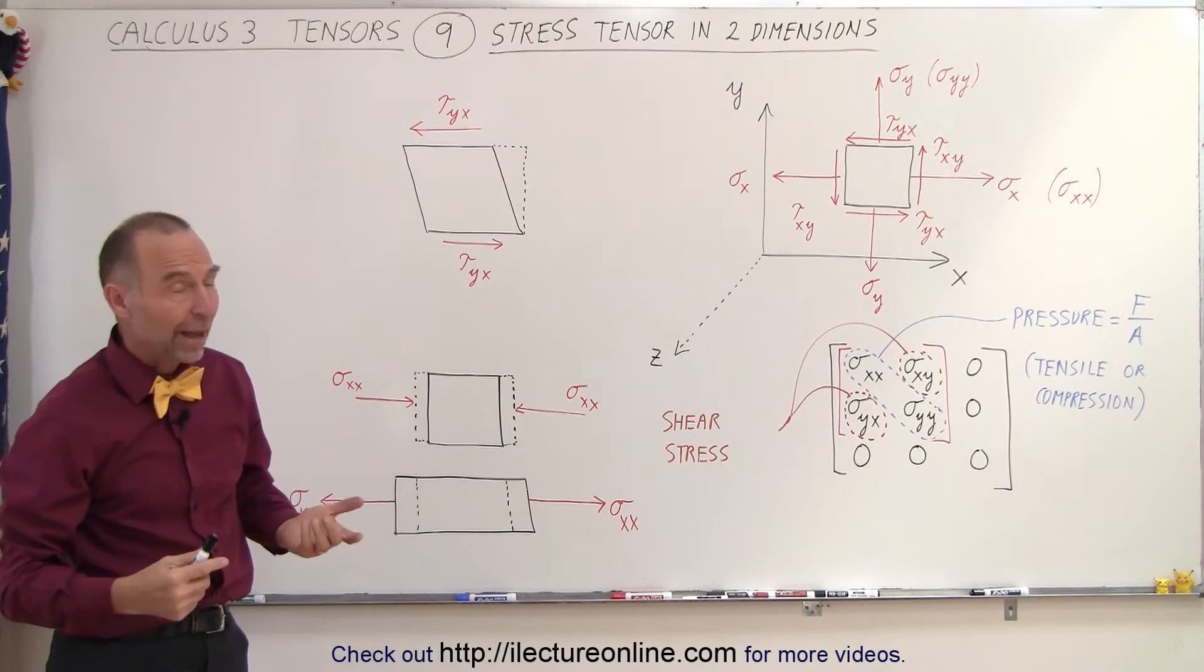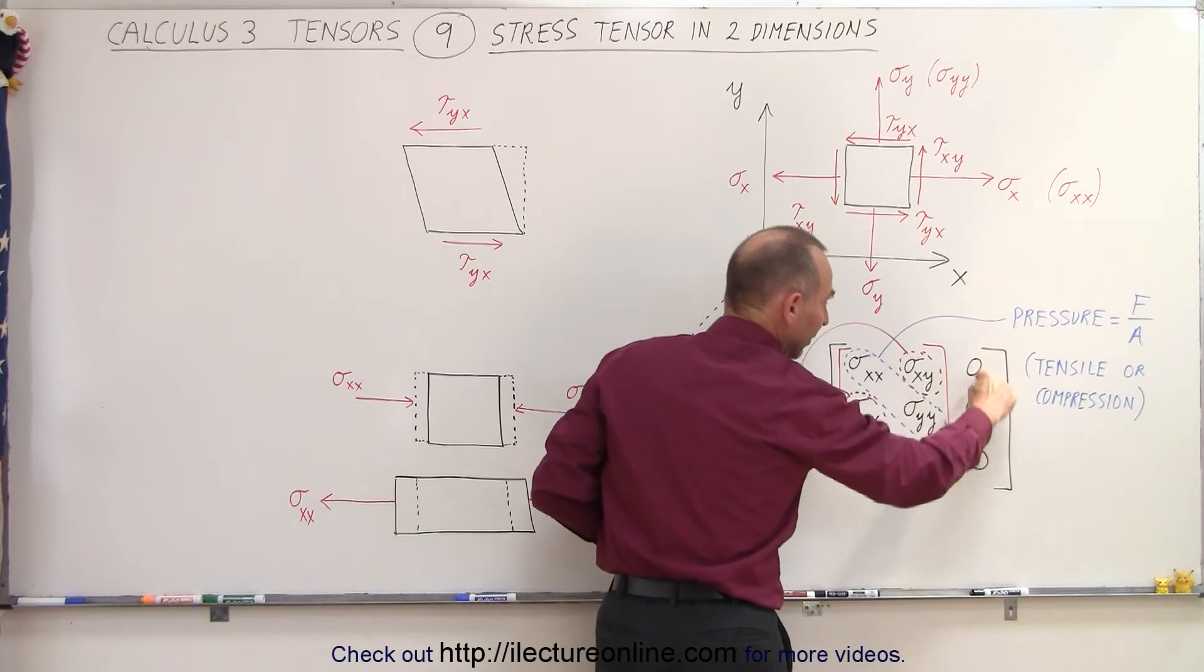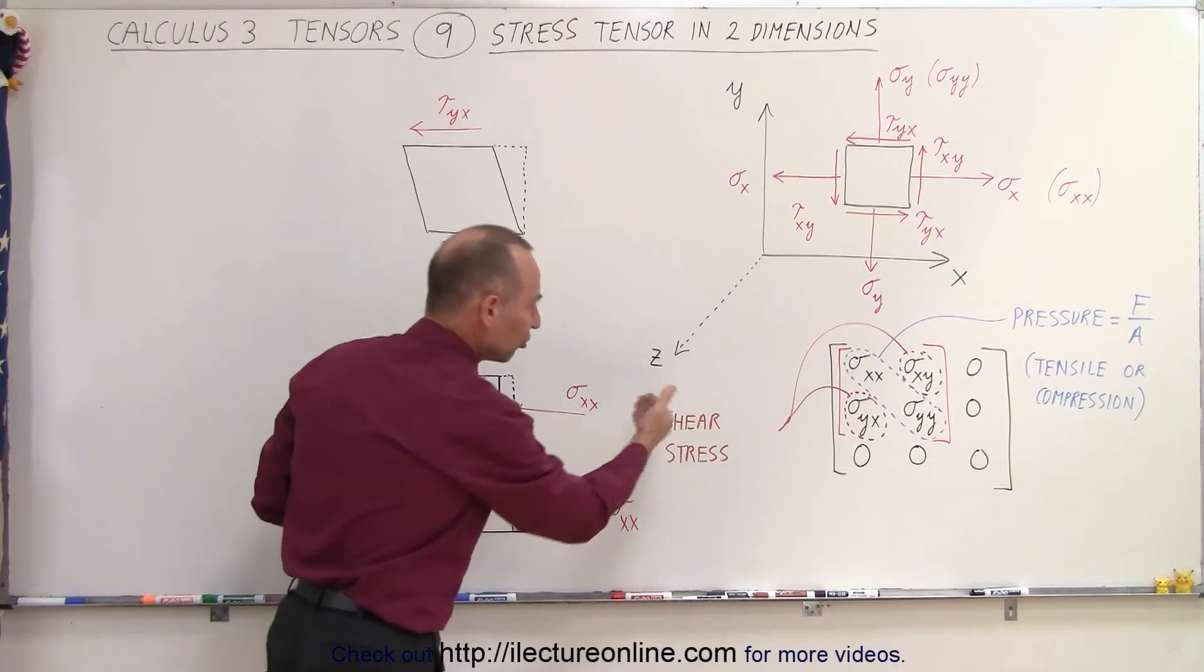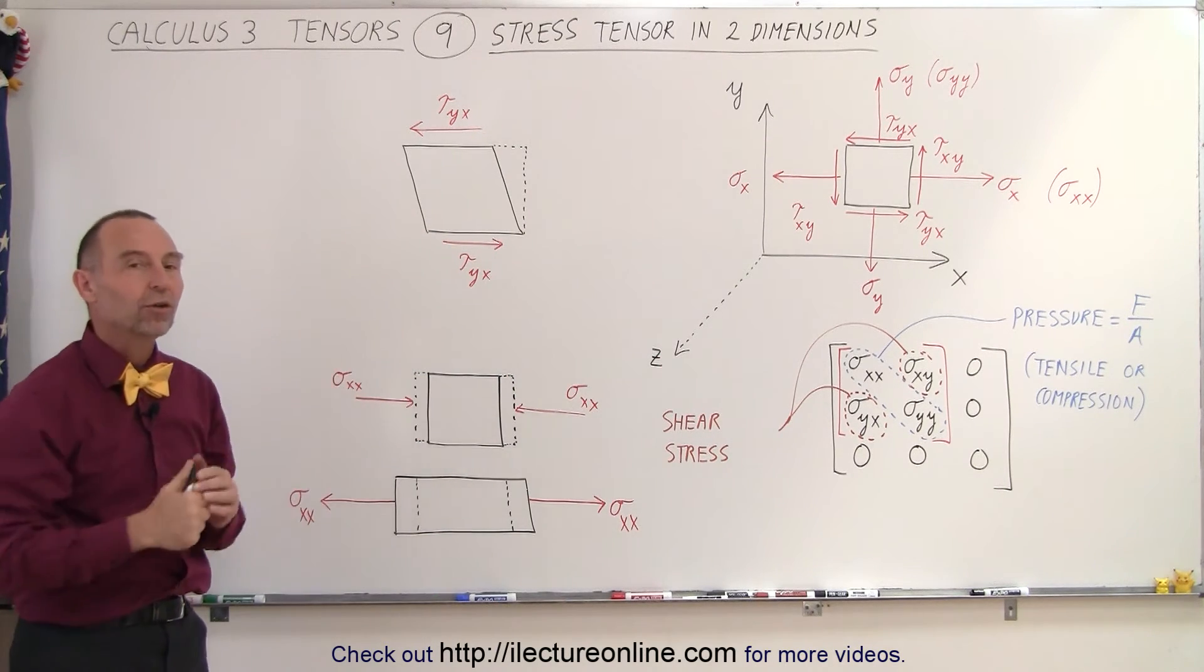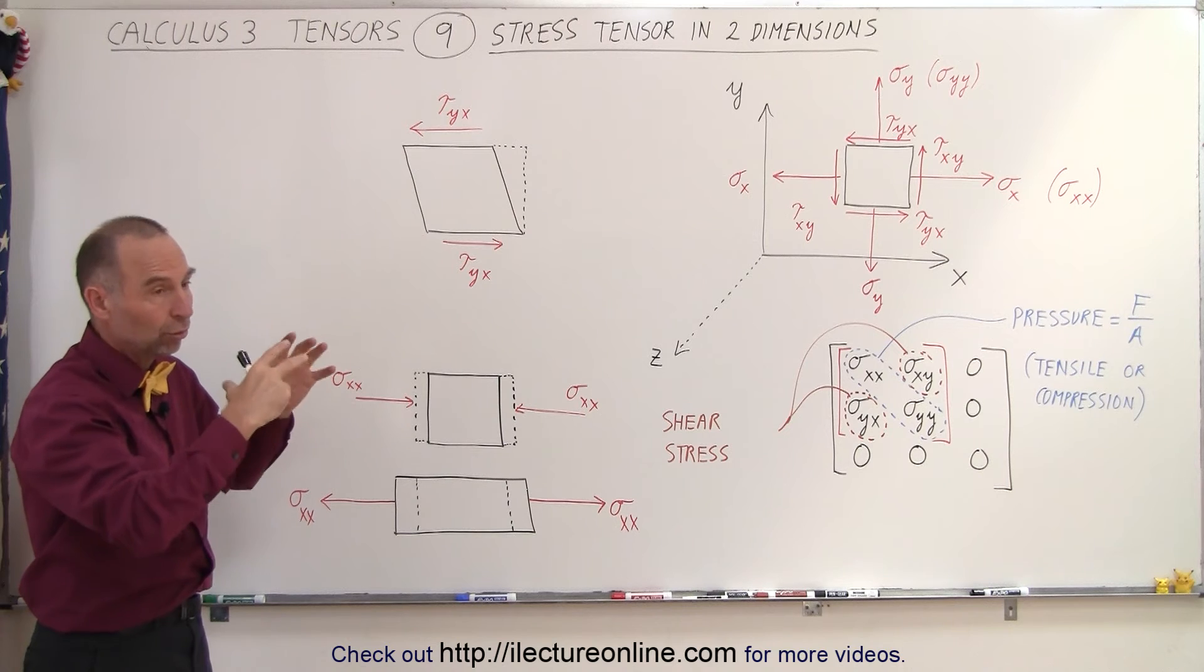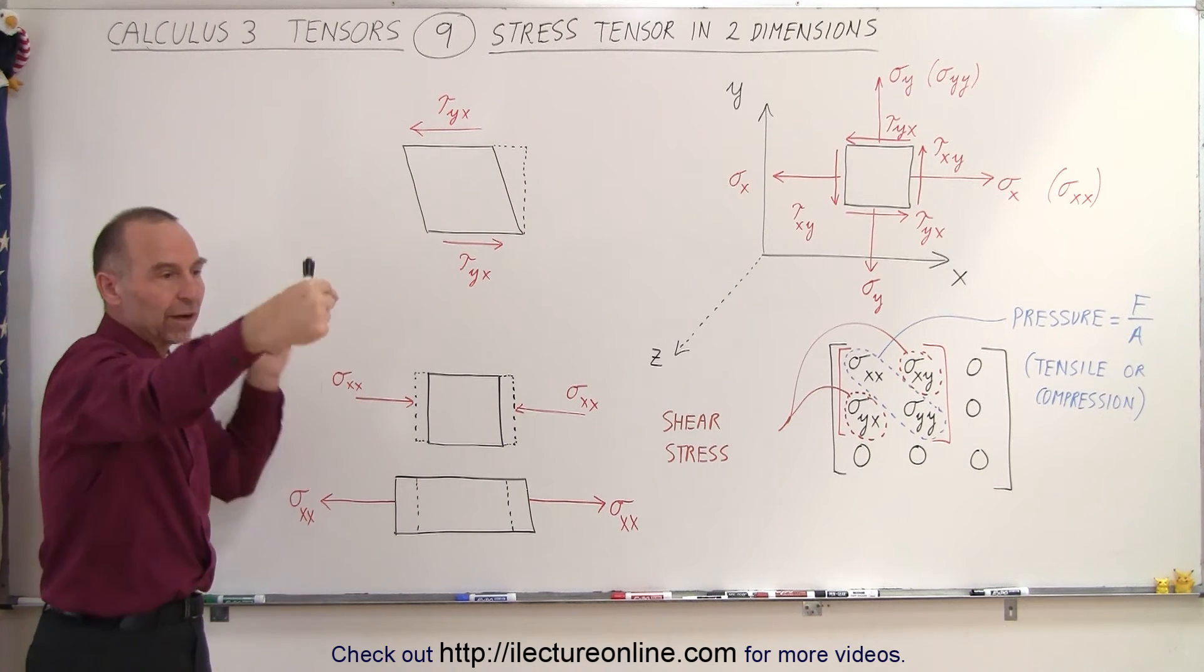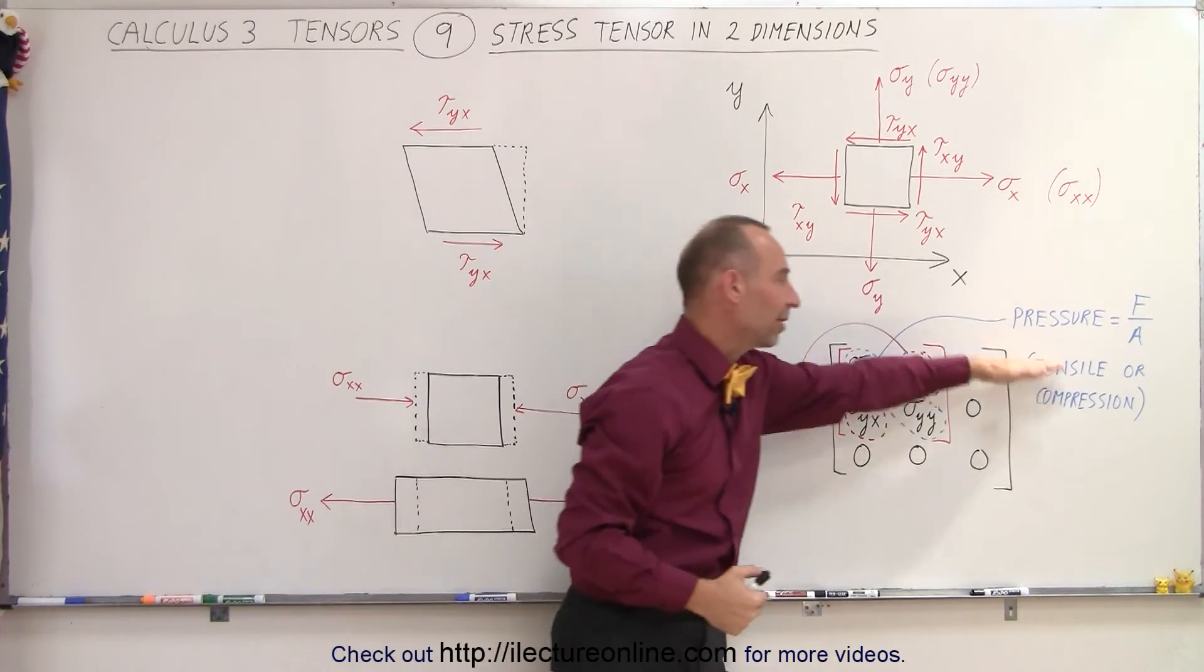If we now add a third dimension, the Z dimension, we'll have a sigma ZZ, and then these other four shear stress components which represent shear stresses in all directions. That's why we need tensor notation - the internal forces on an object in three dimensions have the three directions X, Y, and Z, which represent tensile or compression.